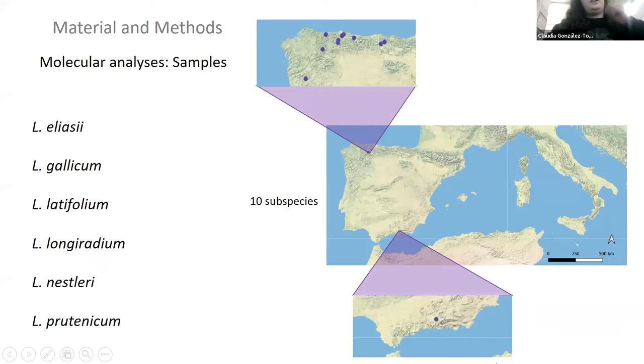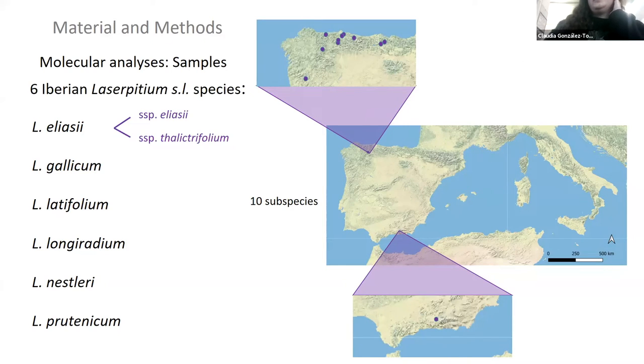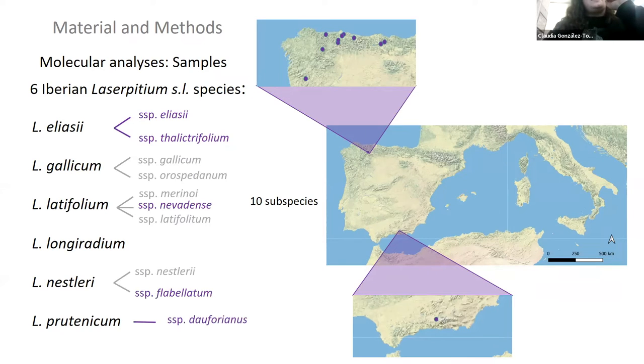For the molecular analysis, we sampled six different taxa species and 10 subspecies. We focused our sampling efforts on the north of the Iberian Peninsula and on the south, this is Sierra Nevada. Some of these subspecies are also specific to the Iberian Peninsula.